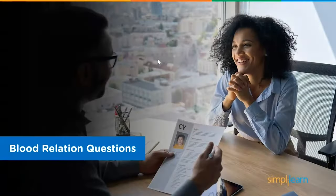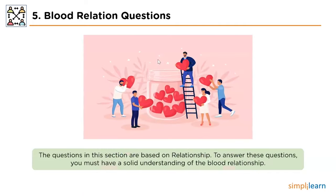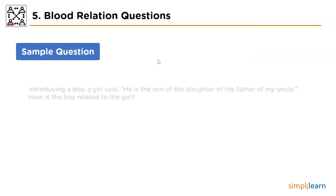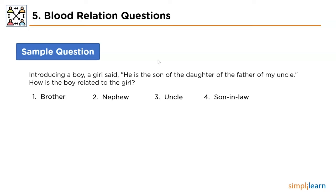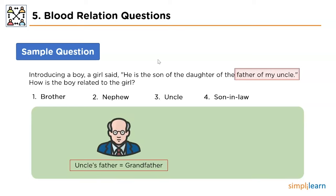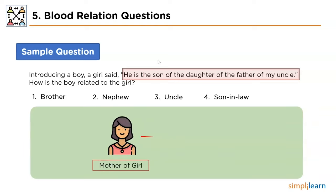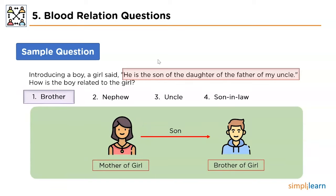The next topic is blood relations. The questions in this section depend upon relations, so you should have a sound knowledge of blood relations to solve them. The problem states: introducing a boy, a girl said 'he is the son of the daughter of the father of my uncle.' Tracing from backward — the father of my uncle is the grandfather; this grandfather has a daughter; that daughter has a son. This means the boy is the girl's brother, which is option 1.